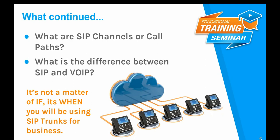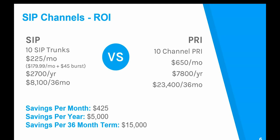What exactly are SIP channels? Each SIP trunk supports SIP channels. A SIP channel is equivalent to one incoming or outgoing call. A SIP trunk can hold an unlimited number of channels, so users only need one SIP trunk no matter how many concurrent calls they expect. The number of channels required depends on how many calls the business will make at any one time. Let me give you an example of SIP channels and the return on investment.